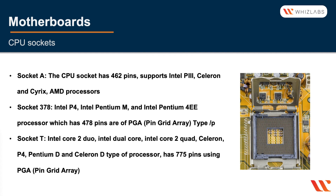Some popular CPU sockets, starting from the earliest: Socket A was one of the earliest with 462 pins, supporting Pentium 3, Celeron, and AMD processors. Socket A is the one exception where both AMD and Intel processors could be installed, because at that time Intel and AMD had an agreement and were creating pin-compatible CPUs — but this was a long time ago and unlikely to be encountered today.